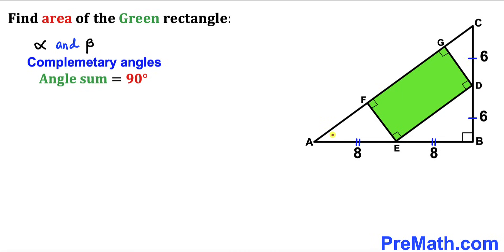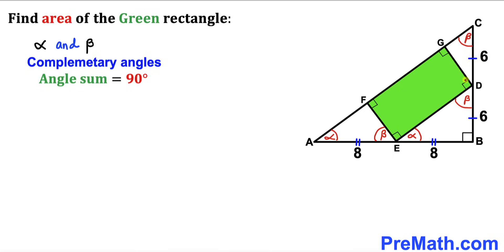Let's assume that this angle over here is alpha. We have this 90 degree angle, so therefore this angle is going to be angle beta. Now let's focus on triangle AEF. We know that this angle is 90 degrees and this angle is alpha, so therefore this angle has got to be beta. And now we know that this angle is 90 degrees and this angle is beta, so this angle has got to be alpha. Now let's focus on triangle EBD. We know that this angle is 90 degrees and this angle is alpha, so therefore this angle has got to be beta, and this angle is beta so therefore this angle has got to be alpha.